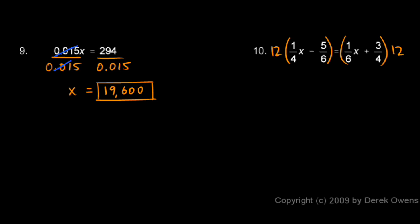I multiply the left side by 12 and I multiply the right side by 12. When we work this out, don't forget to distribute. We have to multiply 12 times 1/4 x and then minus 12 times 5/6. Let's do that.